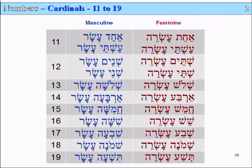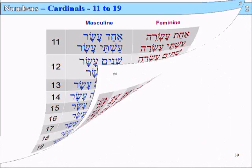So that's it for the cardinal numbers from 11 to 19. They're used in many, many lists in the Tanakh, or Old Testament.